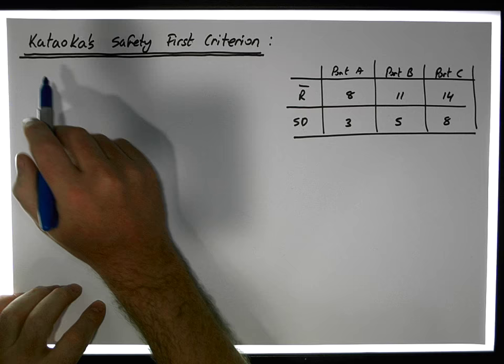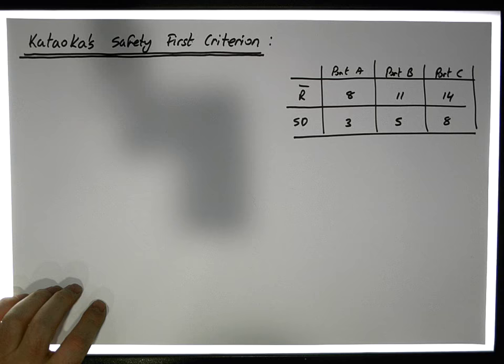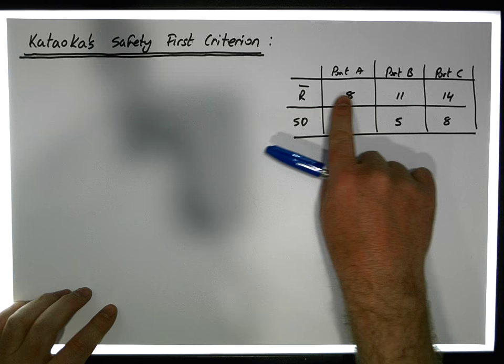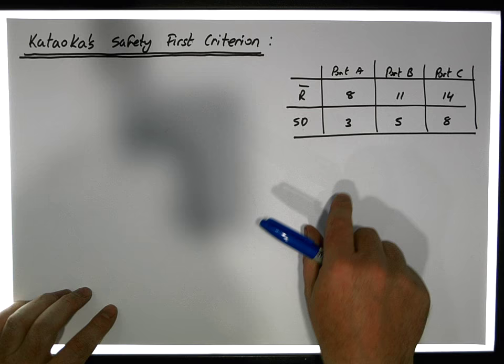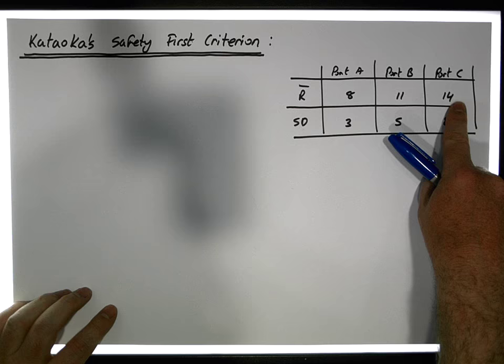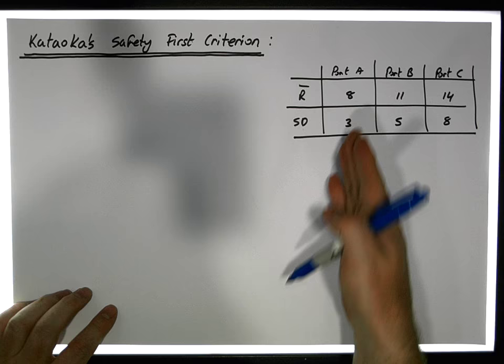That's going to help us make a decision in relation to which portfolio we should choose. Once we know the characteristics of a portfolio — its expected return and standard deviation — we can apply the criterion. In this case we have three portfolios: A, B, and C, with returns of 8%, 11%, and 14% respectively, and standard deviations of 3%, 5%, and 8%.